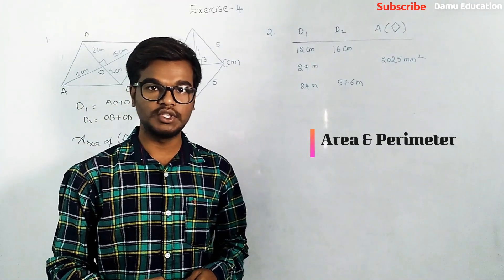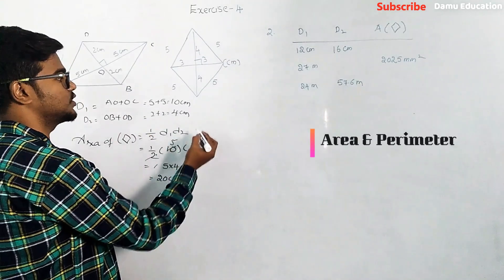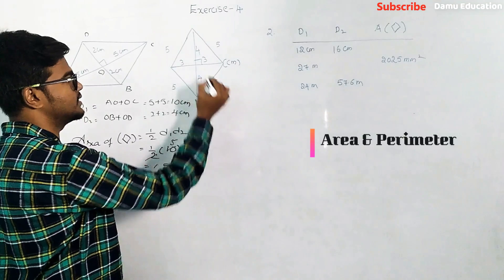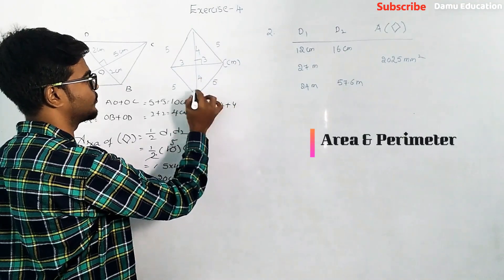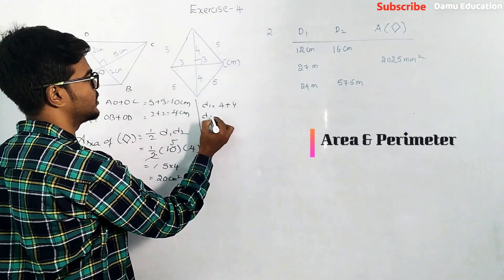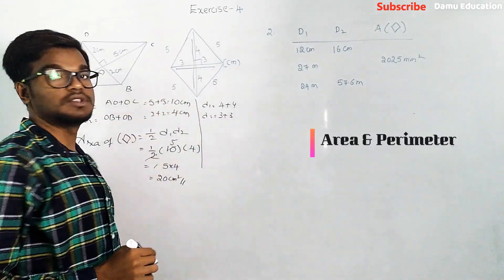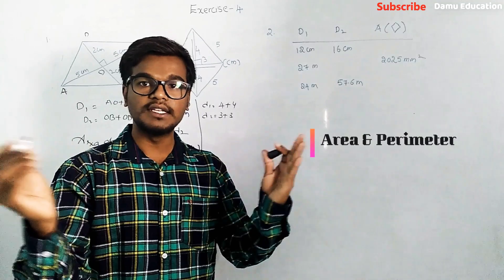Next one is same - we're going to take it as d1 and d2. So d1 is 4 plus 4, that's 8, and d2 will be 3 plus 3, that's 6. So these are the diagonals.